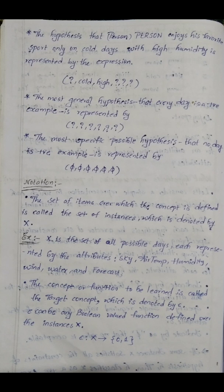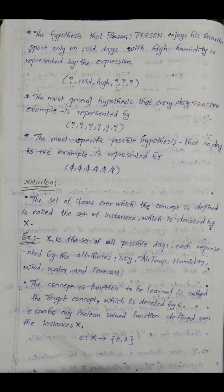X is the set of all possible days, each represented by the attributes sky, temperature, humidity, wind, water, and forecast. The concept or function to be learned is called the target concept, denoted by c. c is a boolean-valued function defined over the instances of X — c: X → {0, 1}.